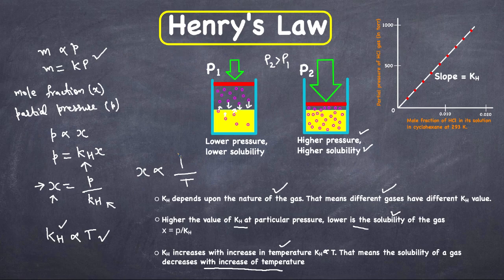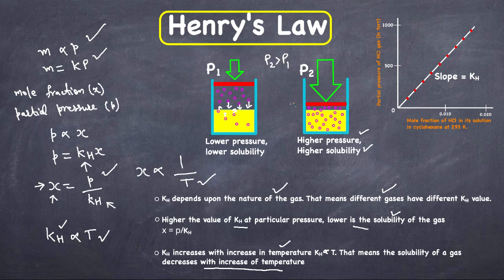In a nutshell, Henry's Law states that solubility is directly proportional to pressure, and inversely proportional to kH — or we can say inversely proportional to temperature. So the solubility of a gas increases with increase in pressure and decreases with increase in temperature.